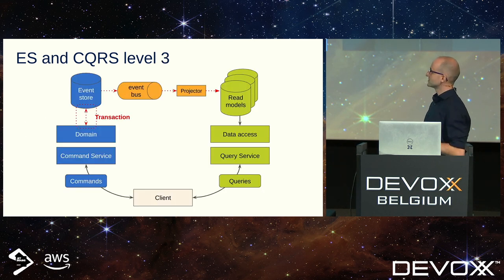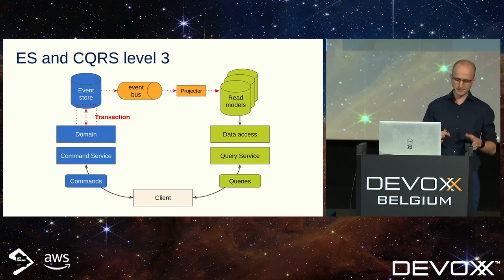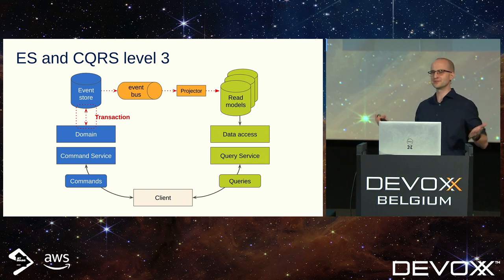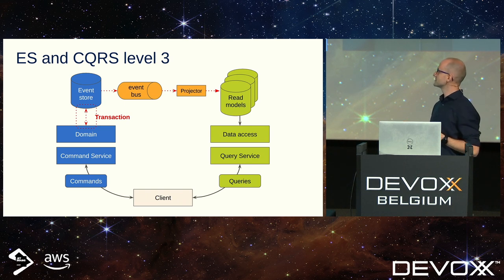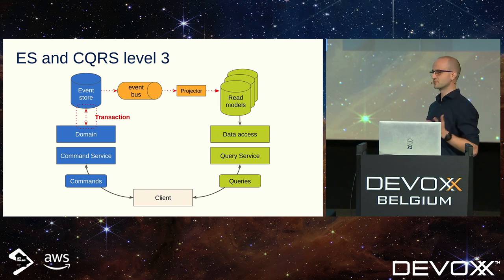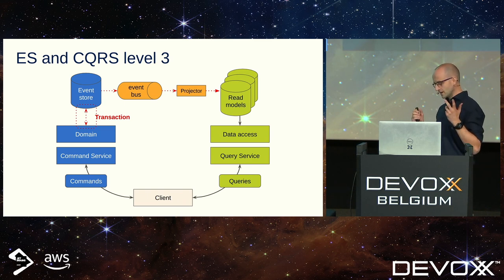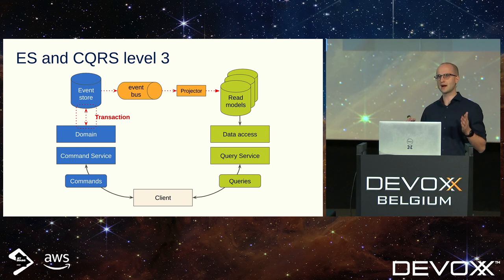Third level introduces a new piece on the diagram: an event bus. Many people will disagree, saying that introducing an event bus here is overengineering — and that's true if you have five projectors and don't care about latency. But this extra buffer between your event store and your projectors gives you nice benefits. You can launch hundreds of projectors without it being a problem, because event buses were designed to handle such load. And you only need to query your database once for new events, which definitely decreases the database load. Unfortunately, the problem of lag still remains.